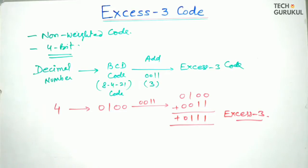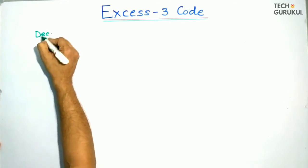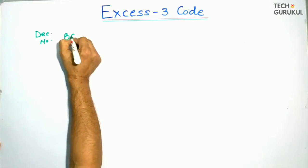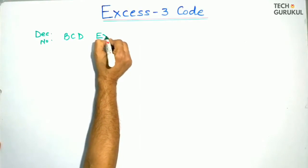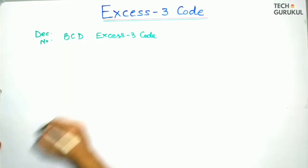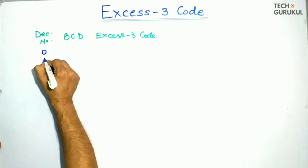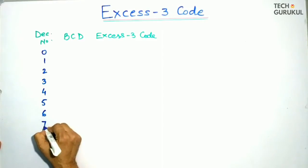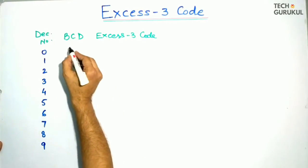Now we will make a table for this. We are given decimal numbers. We convert them into BCD code, then we will make the XS3 code. The decimal numbers are 0, 1, 2, 3, 4, 5, 6, 7, 8, and 9. Now we will write the BCD code for these numbers.